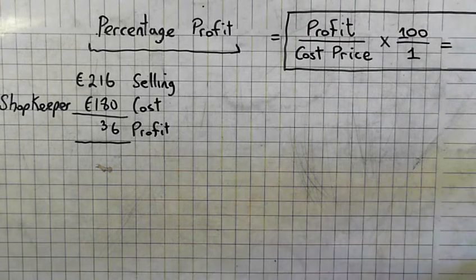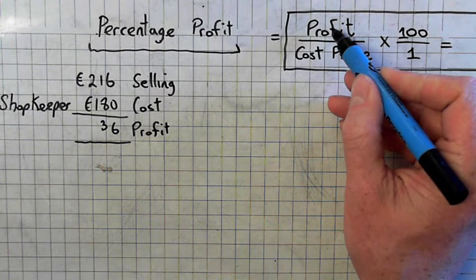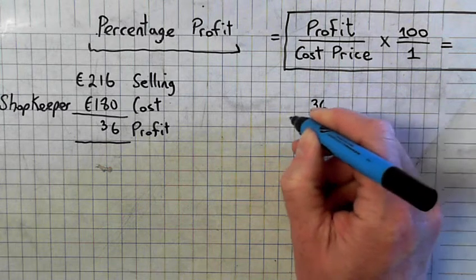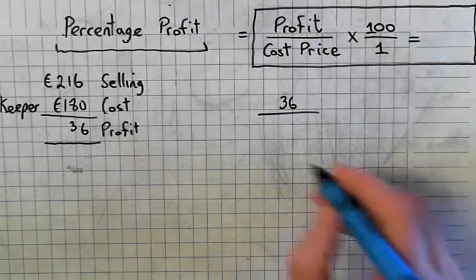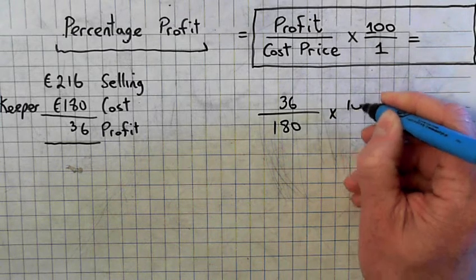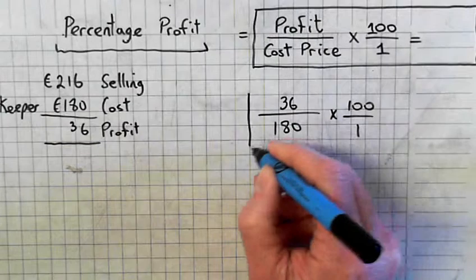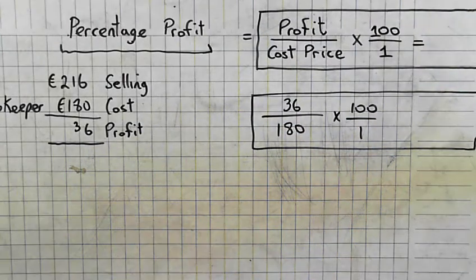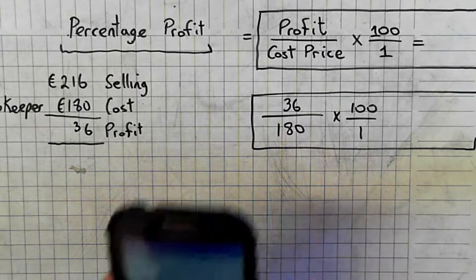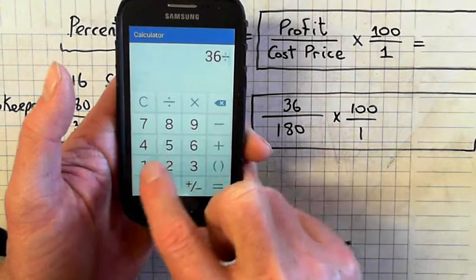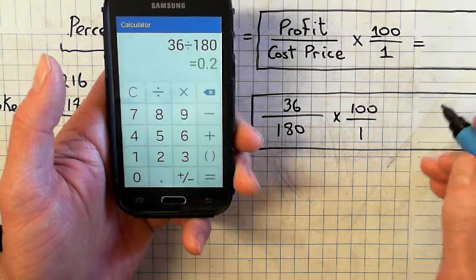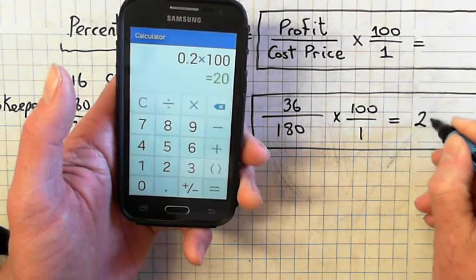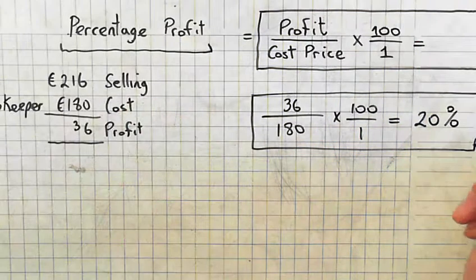What's the percentage profit? So percentage profit: profit on top, €36, over the cost price, €180, times 100 over 1. So get out your calculators. 36 divided by 180 equals 0.2, and multiply that by 100 to get percent. 20% profit.